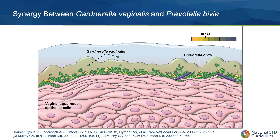Prevotella bivia is another common BV-associated bacteria that is acquired from maternal and/or environmental sources. It is normally present in very low concentrations in the vaginal microbiome. Gardnerella vaginalis and Prevotella bivia have a well-established symbiotic and synergistic relationship. For example, proteolysis by Gardnerella vaginalis produces amino acids that enhance Prevotella bivia growth, and ammonia produced by Prevotella bivia stimulates Gardnerella vaginalis growth.